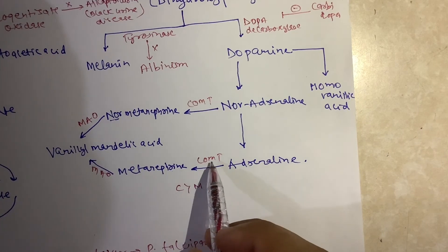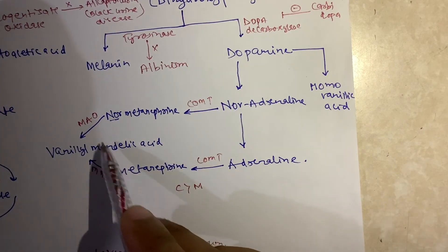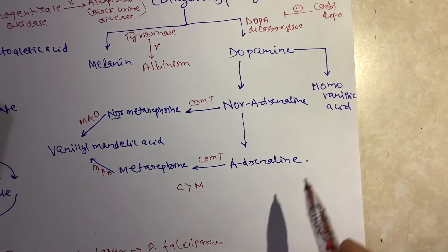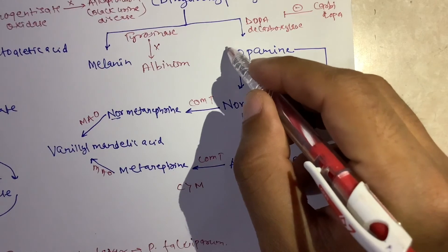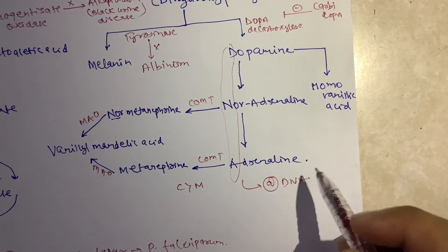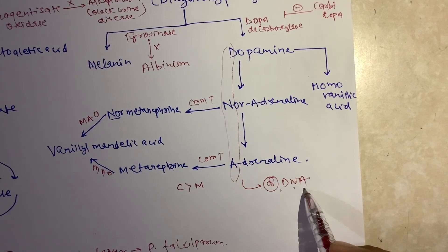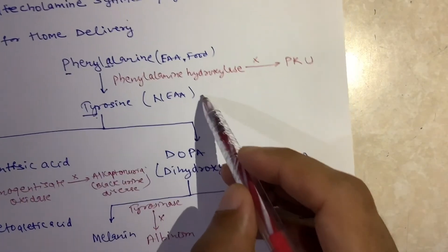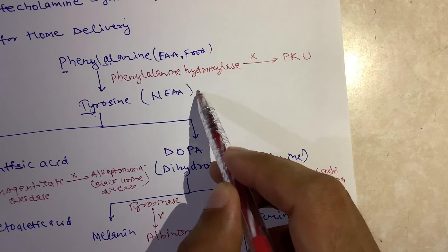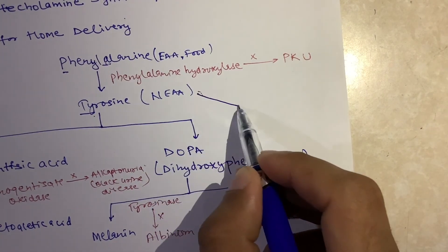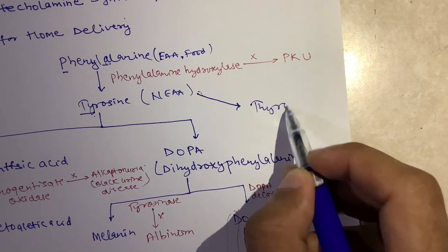I remember this sequence by the mnemonic DNA — Dopamine gets converted into Noradrenaline, and then Adrenaline. Finally, tyrosine is also essential for its conversion into thyroxine in the thyroid gland.